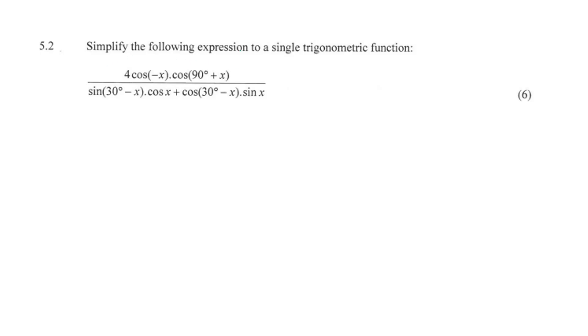Question 5.2. Simplify the following expression to a single trig function. So 4 cos(-x) times cos(90° + x).